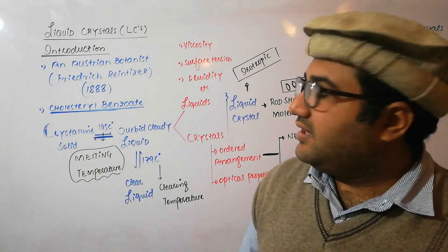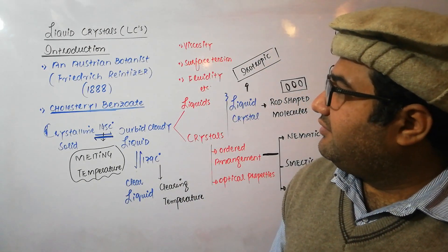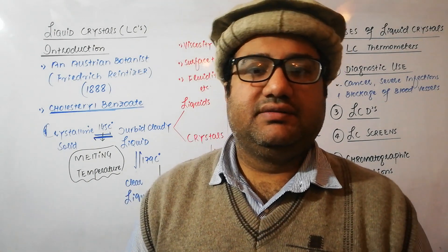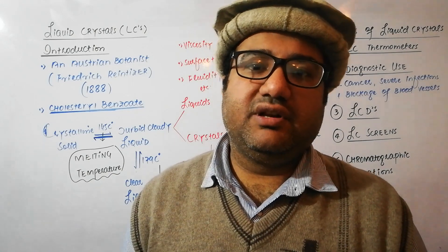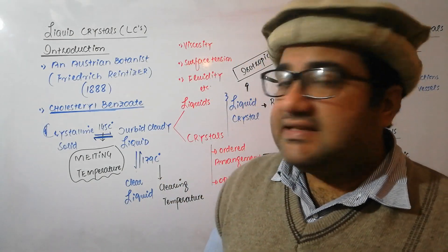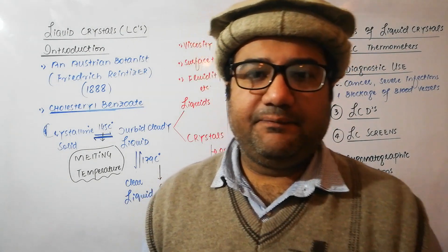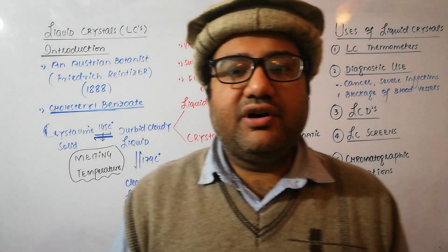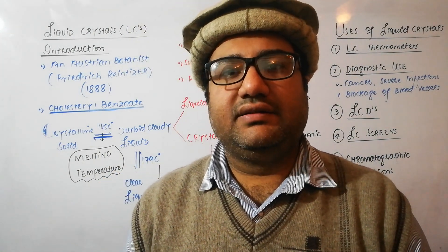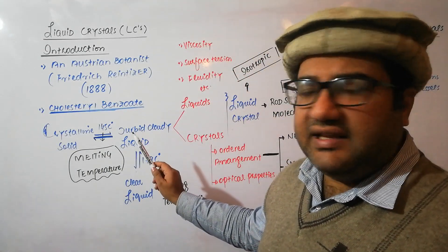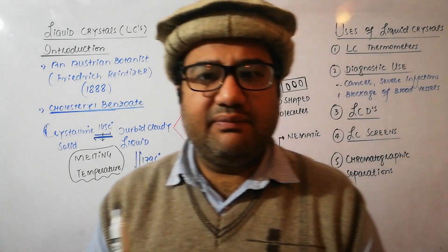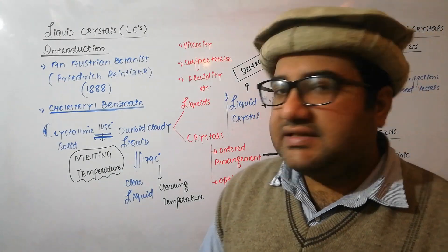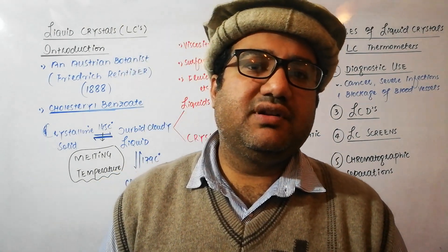Let us first discuss the introduction of liquid crystals. There was an Austrian botanist named Frederick Reinitzer. He was experimenting with cholesterol benzoate, which is a derivative of cholesterol and is a crystalline solid. In 1888, he heated cholesterol benzoate, and at 145 degrees Celsius this crystalline solid melted and changed to a turbid — meaning thick, cloudy — milky type liquid.